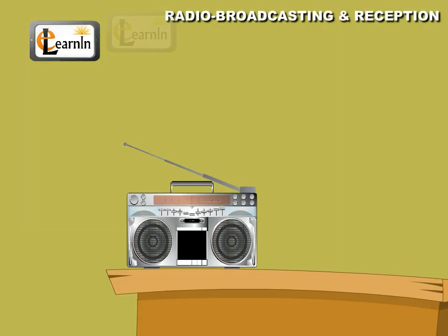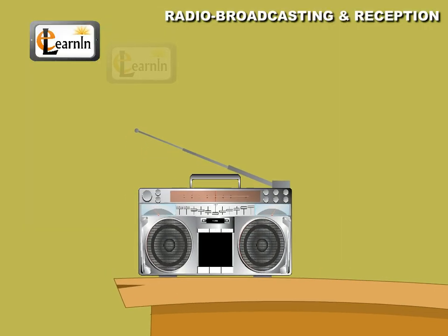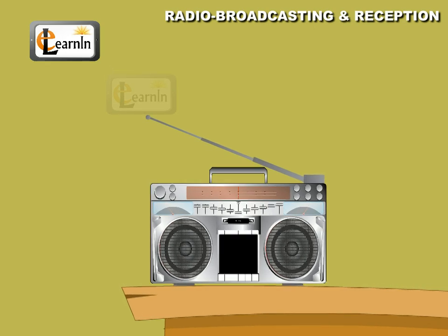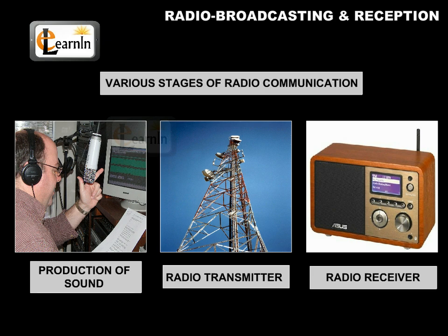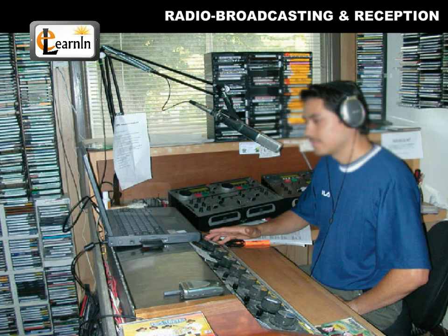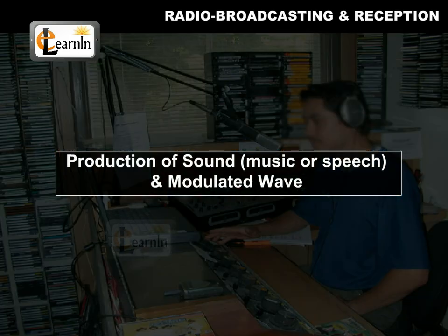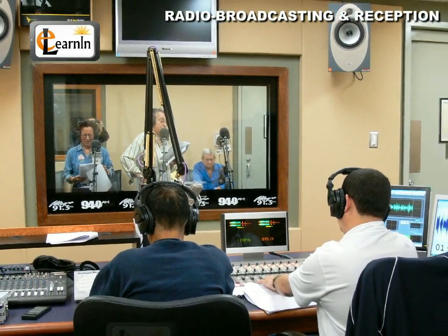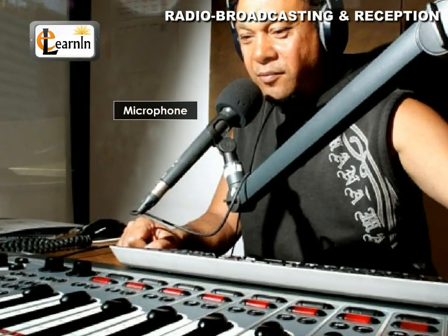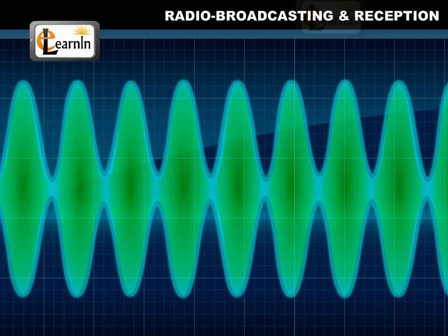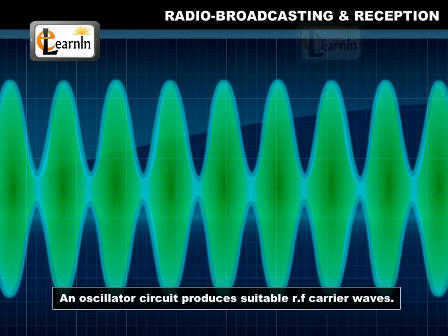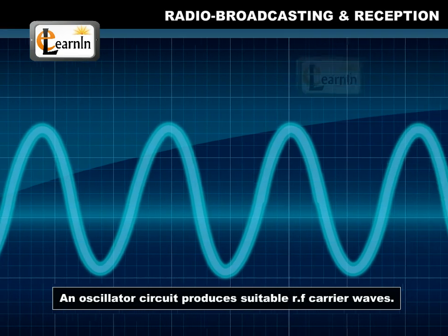Radio Broadcasting and Reception. Using the basic principles of radio and TV communication, radio communication is achieved through various stages. In a studio, the song rendered by a person is converted into electrical signals using a microphone. These signals are in the audio frequency (AF) range. An oscillator circuit produces a suitable RF carrier wave.